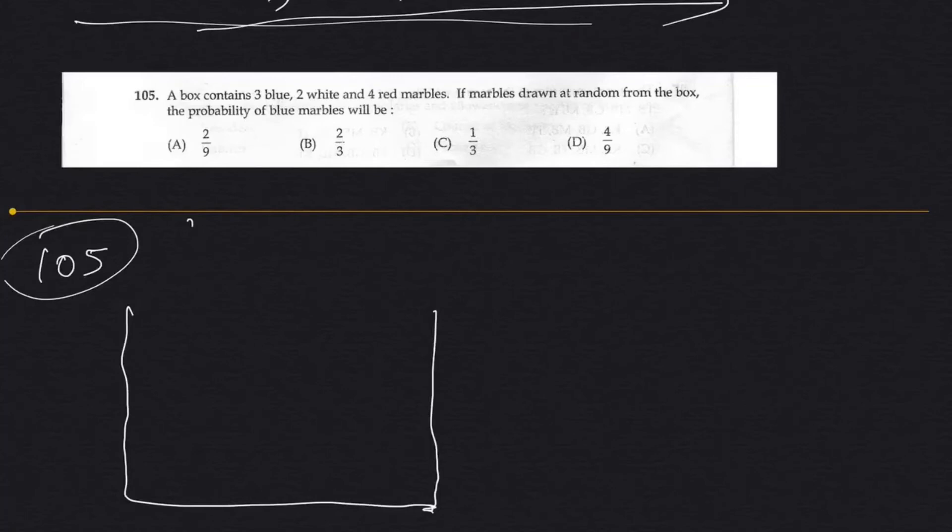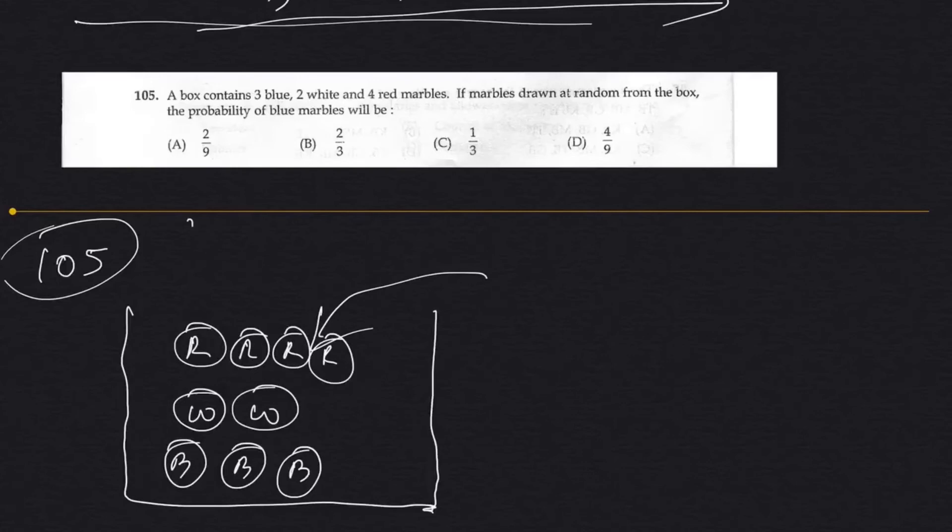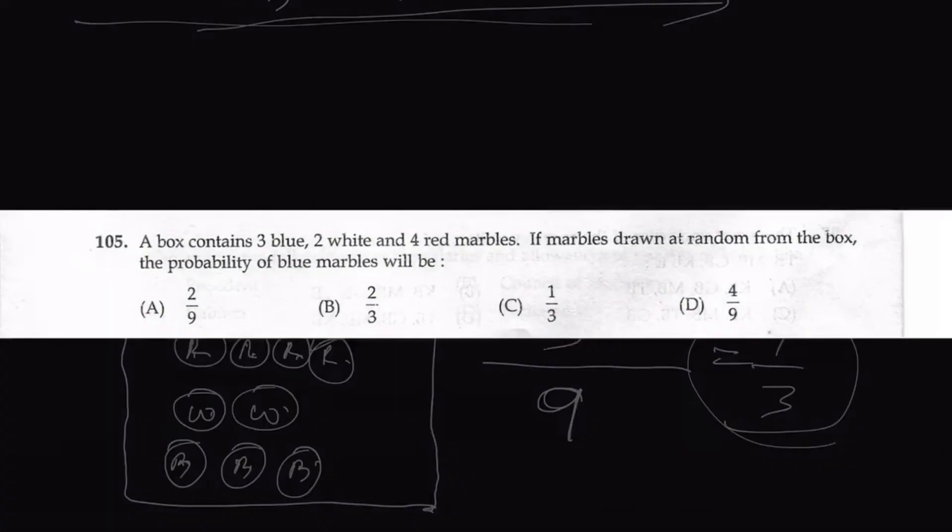But for the sake of explanation for those who have no idea how to solve this, let me explain. A box contains 3 blue, 2 white and 4 red marbles. If marbles thrown at random from the box, what is the probability that the marble is blue color? So what is the total? 1, 2, 3, 4, 5, 6, 7, 8, 9. Nine marbles in total and blue marbles probability will be 1, 2, 3. So it's 3 out of 9 which is simply 1 by 3, which is in option C.